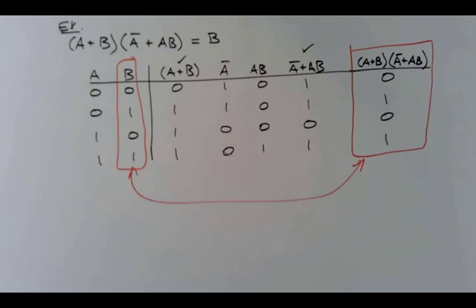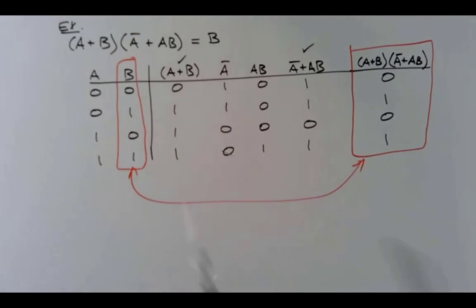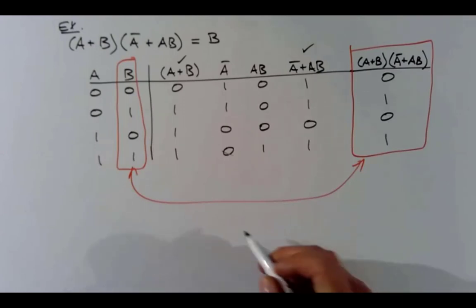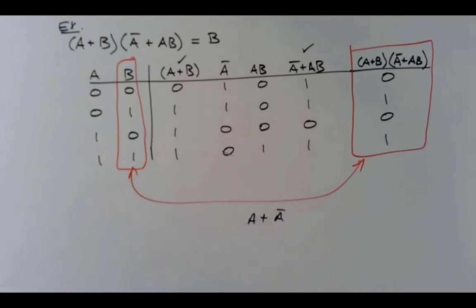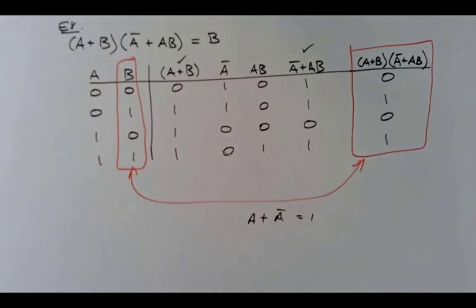This is one way to prove equivalence — not the only way. Another way is to multiply out the two terms algebraically using Boolean rules. For example, A ORed with A-inverse always equals one, because if A is zero then A-inverse is one, and if A is one then A-inverse is zero. Using rules like that you can expand and simplify the expression and show that it reduces to just B.